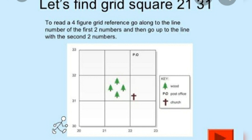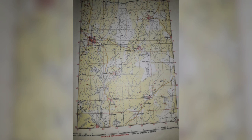After noting down the two numbers of the easting, we then go for the two numbers of the northing. Look at the object again — the line that is below the trees is line number 31. So the four-grid reference for the trees is 2131. Looking at the key: the tree symbol indicates 'wood,' PO indicates 'post office,' and the cross indicates 'church.' The four-grid reference of the post office would be 2232, and the four-grid reference of the church would be 2231. Hope that was easy for you.